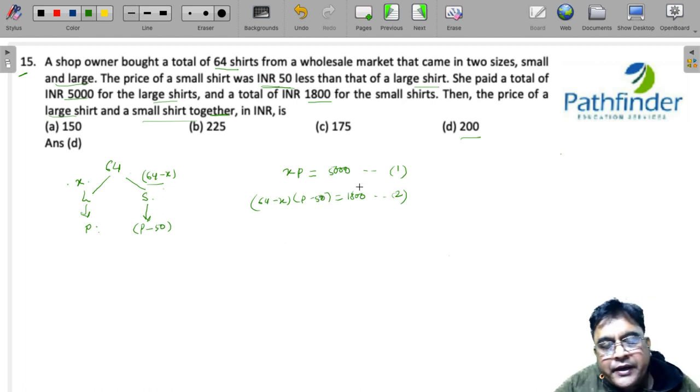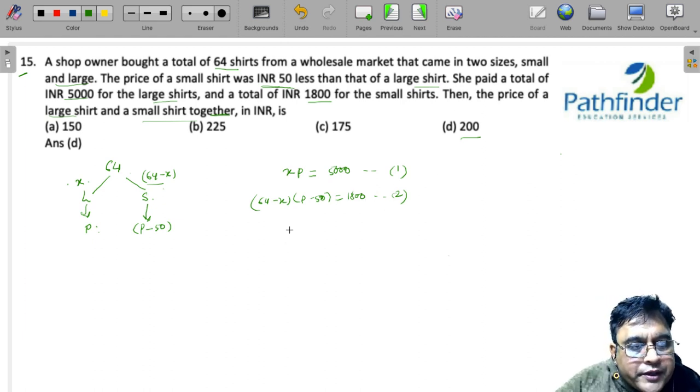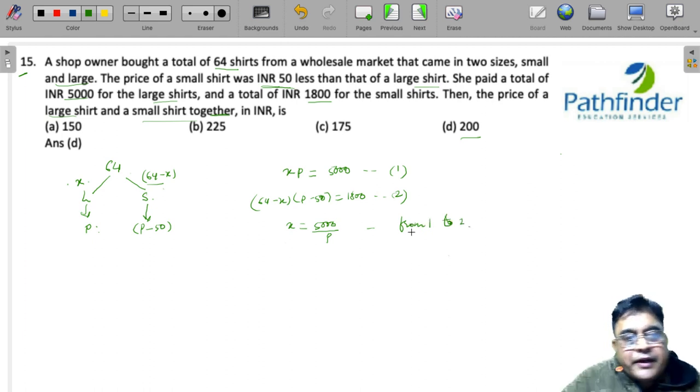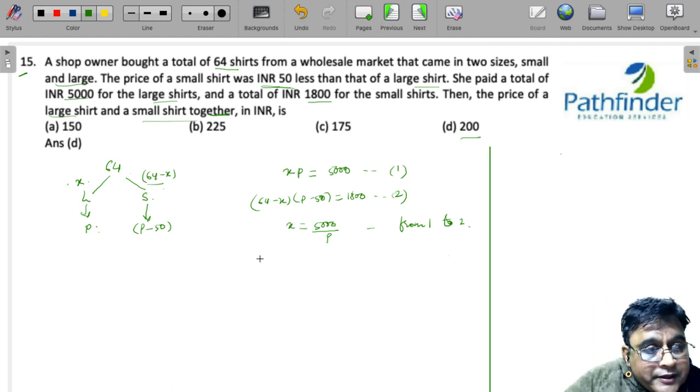We can solve it by using quadratic equation. What we can do is just substitute X equals 5000 upon P from equation 1 into equation 2, and we will get a quadratic equation. But in an exam situation, solving that kind of quadratic equation will be tedious. So what else we can do? Well, we can solve it by using options intelligently.